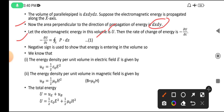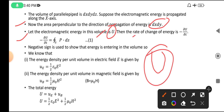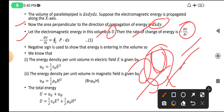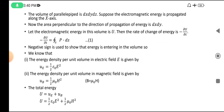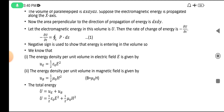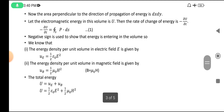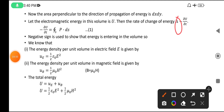Let the electromagnetic energy in this volume be u. The rate of change of energy — meaning how much energy is passing per second, per hour — is ∂u/∂t. The minus sign is attached because energy is entering. This equals, through the area, the energy flux formula.